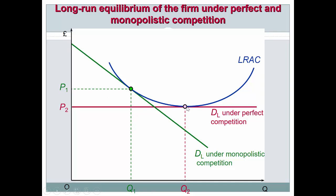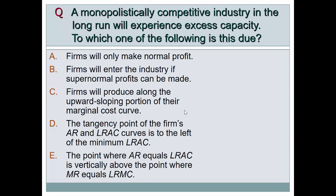Under perfect competition, customers from other towns come back because the quantity offered is higher at lower cost. This confirms that perfectly competitive markets are more efficient than monopolistically competitive ones. Now a quick question: a monopolistically competitive industry in the long run will experience excess capacity — which of the following is this due to? Take 10 seconds.